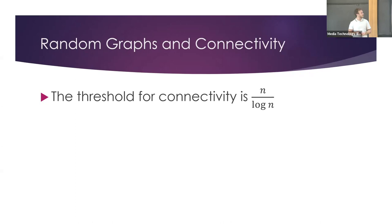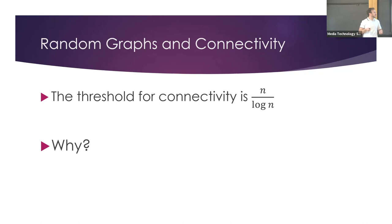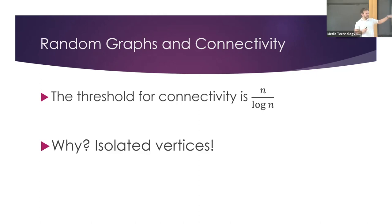The first thing studied regarding this random graph — in the first paper introducing this model — is the threshold for connectivity: the value of p at which the graph becomes connected. As was correctly pointed out, the threshold is ln(n)/n. The next question is why. What makes ln(n)/n the threshold for connectivity? The answer: isolated vertices.